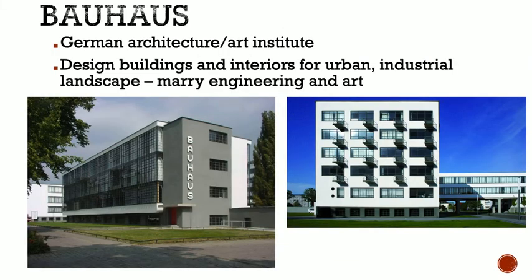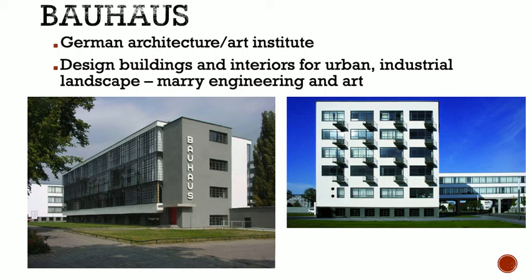In architecture, the German Art Institute known as Bauhaus became the world's leading avant-garde architectural school. Buildings and interiors were designed for the urban industrial landscape, marrying engineering and art — looking at architecture not just as a pretty building, but as a building that serves function. Old stone buildings from the 1800s and 1700s were beautiful but not practical; many were torn down because there was no easy way to expand or add modern infrastructure like computers, wiring, or air conditioning. More modern architecture serves far more function and is easier to repurpose.